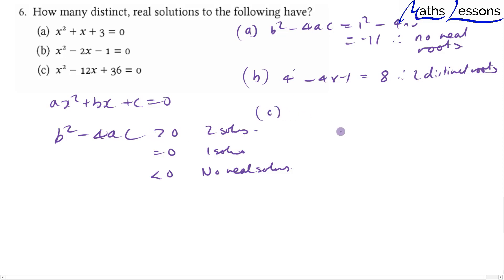And guess what, do you think part c is going to be? So we've got minus 12 squared minus 4 times 36, and that comes out to be 0. Therefore we have 1 repeated root to this question.